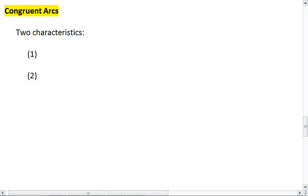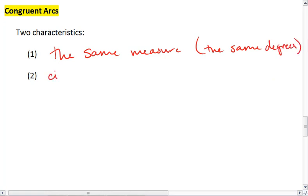Last thing I want to talk about are congruent arcs. Congruent arcs have two characteristics. They have the same measure, so the same degrees, and they're in circles with congruent radii.